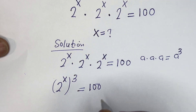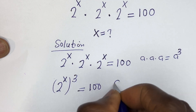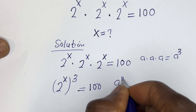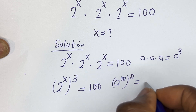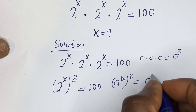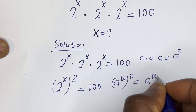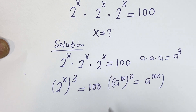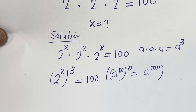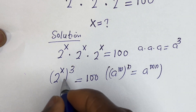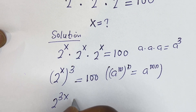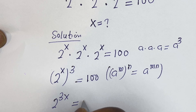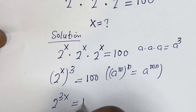Now take note that if you have a to the power of m, to the power of n, this is equal to a to the power of m·n. So this can be written as 2 to the power of 3x is equal to 100.